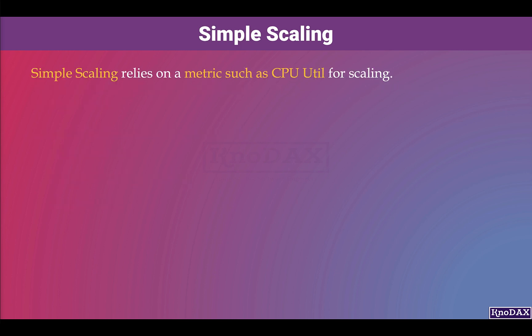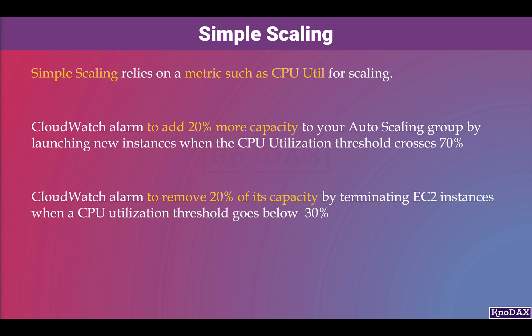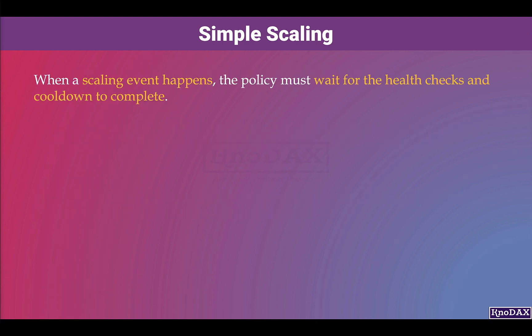Simple Scaling relies on a metric such as CPU utilization for scaling. For example, you can set a CloudWatch alarm to add 20% more capacity to your auto scaling group by launching new instances when the CPU utilization threshold crosses 70%. On the same token, you can also set a CloudWatch alarm to remove 20% of its capacity by terminating EC2 instances when the CPU utilization threshold goes below 30%. In Simple Scaling, when a scaling event happens, the policy must wait for the health checks and cooldown to complete.